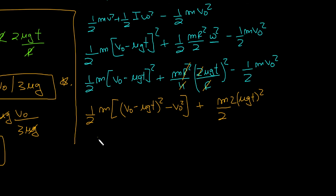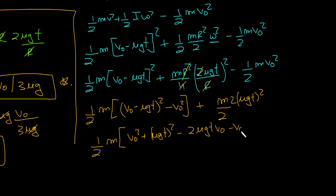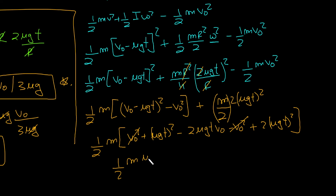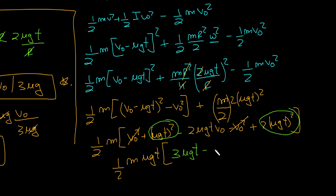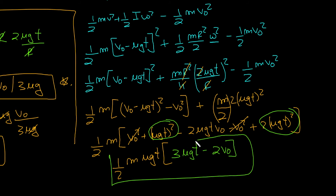Multiplying and dividing by 2 to factor out (1/2)m as common, and expanding (v₀ - μgt)²: v₀² + (μgt)² - 2μgt·v₀. Combined with the +2(μgt)² term, v₀² cancels with -v₀². Factoring out μgt, the two (μgt)² terms combine to give 3μgt. So the work done by friction as a function of time is: W = (1/2)m·μgt·(3μgt - 2v₀).